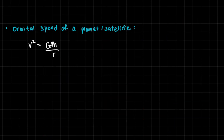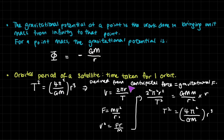Finally, the orbital speed of a planet or satellite is given by the square root of GM over R, which can also be derived from the same approach. That's about it for the gravitational formulas you need to know for A-level physics. The real difficulty lies in distinguishing gravitational potential from gravitational force, gravitational field strength, and gravitational potential energy — that's the most confusing part of the chapter, but it can be resolved through memorization of definitions. I hope this was helpful. For other similar physics videos, check out the rest of my channel. Thank you for watching.